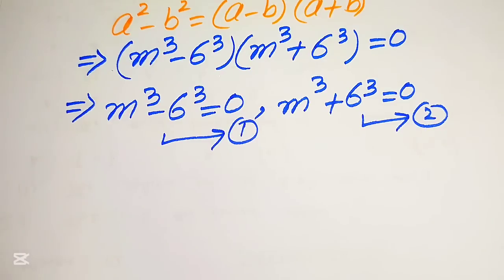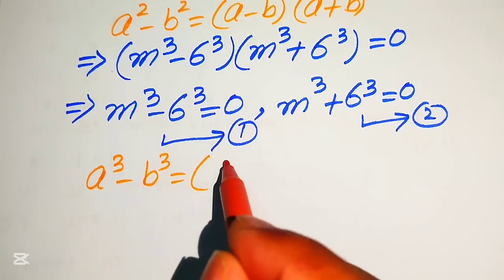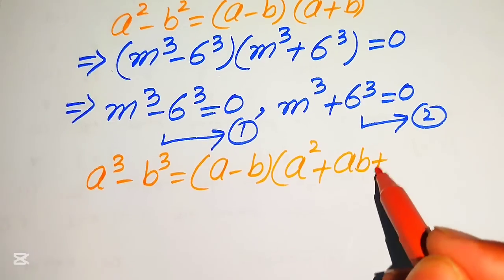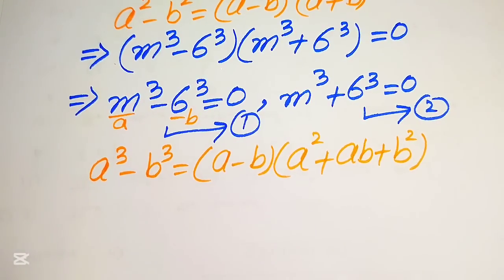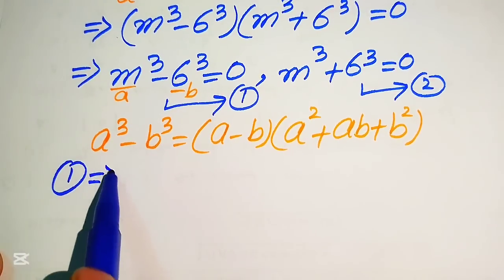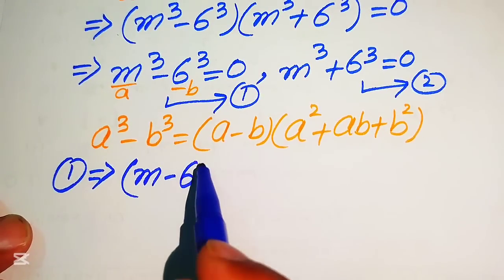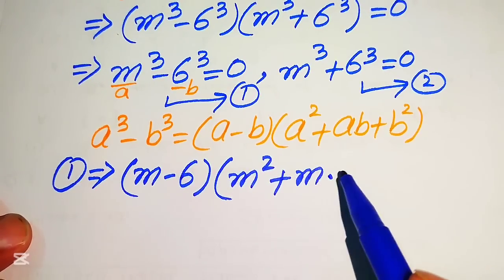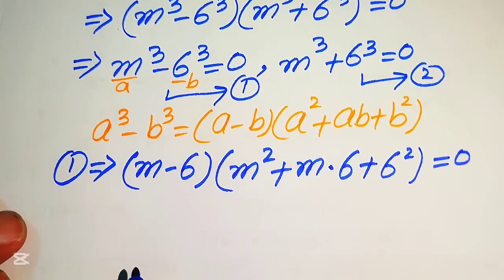For equation 1, we apply the cubic formula: a cubed minus b cubed equals a minus b times a squared plus ab plus b squared. Here a is m and b is 6. Substituting, we get m minus 6, times m squared plus m times 6 plus 6 squared, equals to 0.